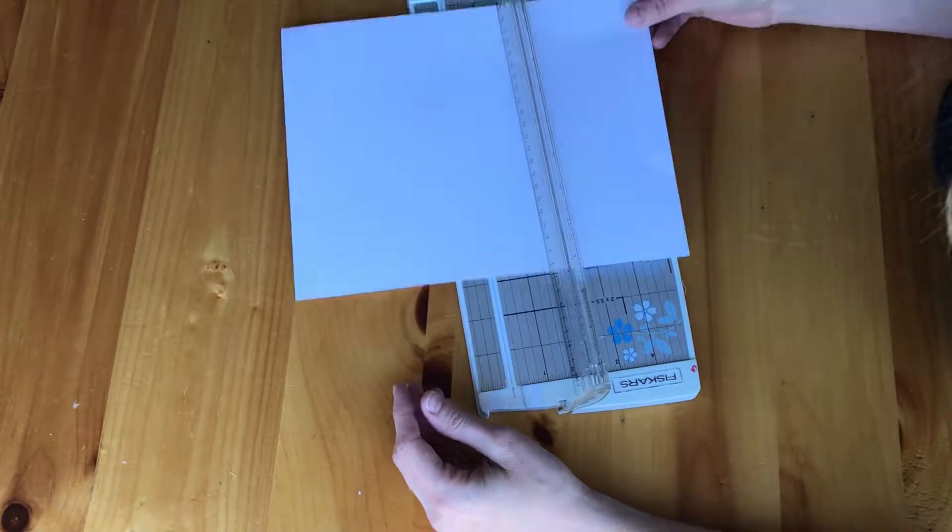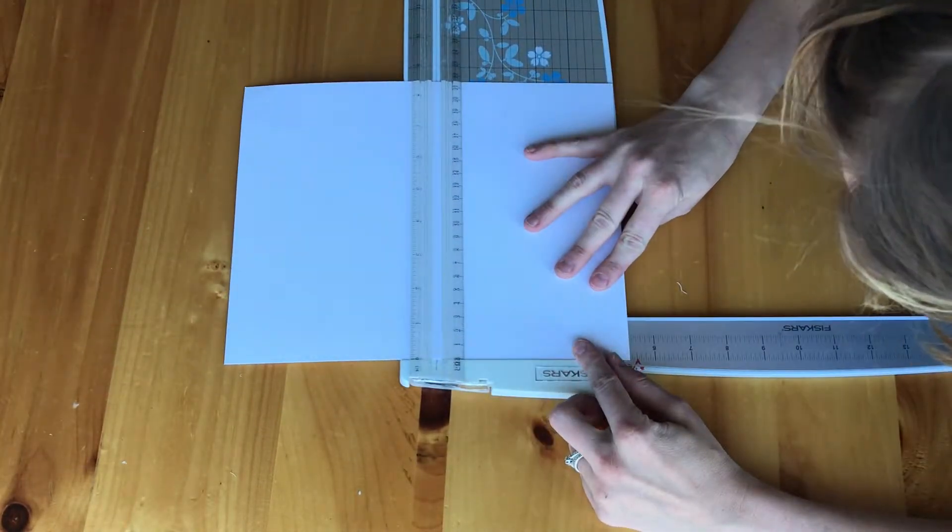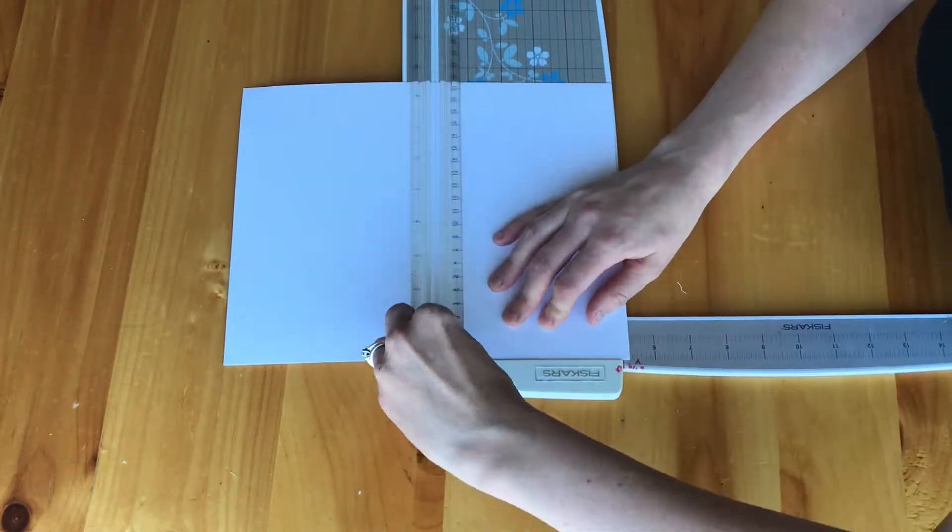Next step is to cut a piece of white paper that is 5 and a quarter by 3 and 3 quarter inches.